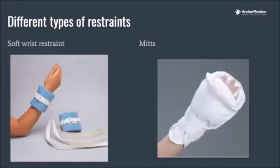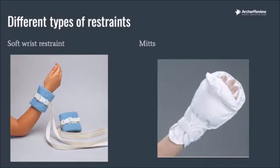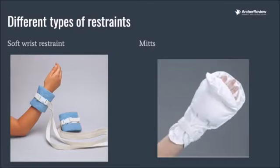Let's talk about some different types of restraints. The first and most common is a soft wrist restraint — basically a bracelet that wraps with velcro and a clip around the wrist. It can be two-point, meaning just the wrists or just the ankles, or four-point, where all four extremities have a device. The loops then get knotted around an item that cannot move. You cannot tie these to the bed rail because it can be moved up and down — no chairs, no rolling equipment. It has to be tied to a loop on the bed itself that cannot move.